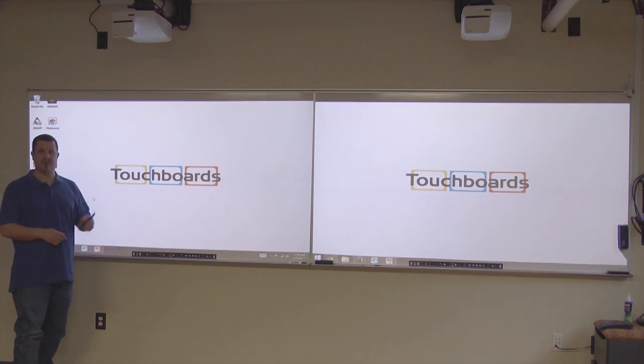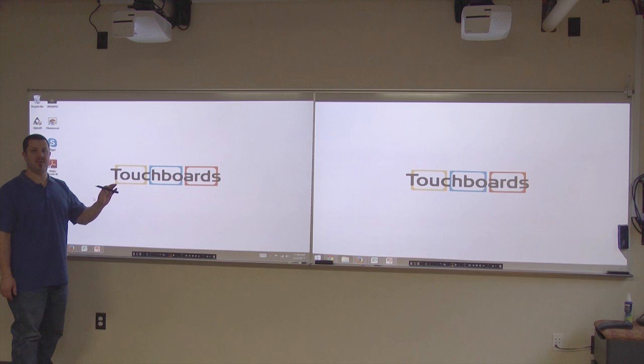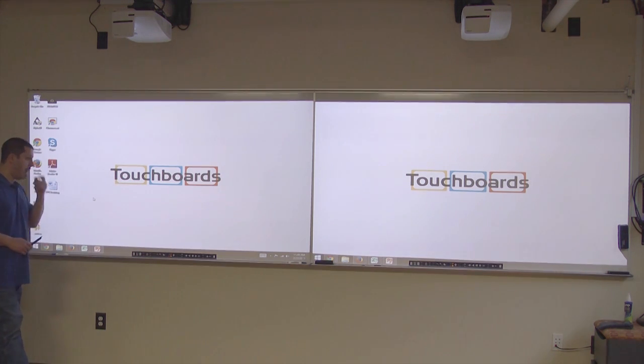This is an Eno board, so it uses an electronic pen. You get one of these pens with the board, you can use up to four. Now, this board, it's over 14 feet wide. It can be used as one gigantic whiteboard, or you can split it up, and I'm going to show you how that works.